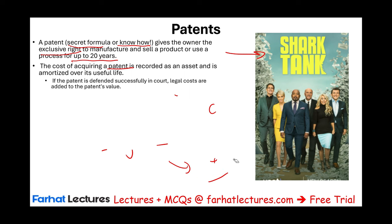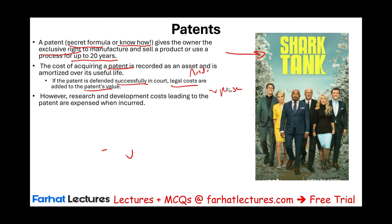What happens sometimes is someone claims you stole their patent, and you have to defend yourself in court. Those legal expenditures depend on whether you were successful. If you prove the patent is yours, legal costs are added to the patent — so the legal costs become assets. If you are not successful, those legal costs are expensed. However, research and development costs leading to a patent are expensed as incurred — that's when you invent the patent yourself.